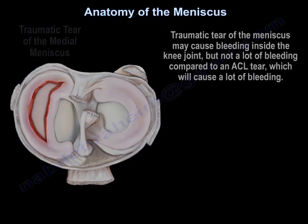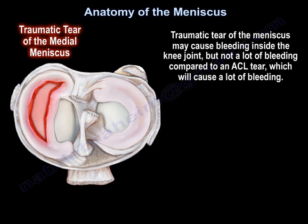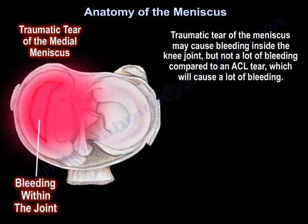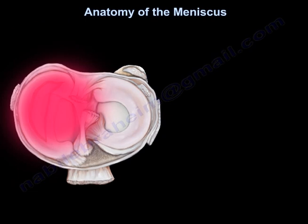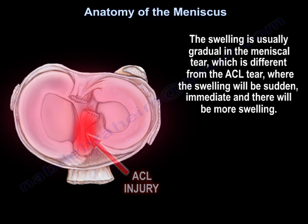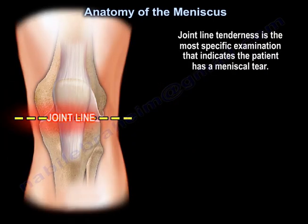A traumatic tear of the meniscus may cause bleeding inside the knee joint, but not as much bleeding as an ACL tear. The swelling in a meniscal tear is usually gradual, which is different from an ACL tear where the swelling is sudden, immediate, and more pronounced. Joint line tenderness is the most specific examination finding indicating a meniscal tear.